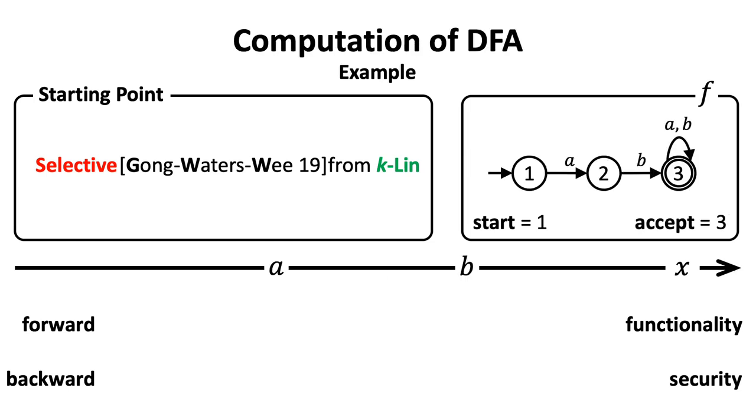Let me explain the two ways to compute DFA using this example first, and then go back to the GWW strategy.